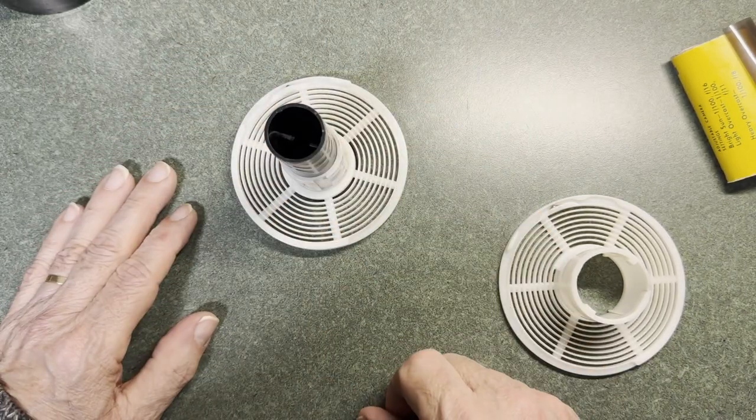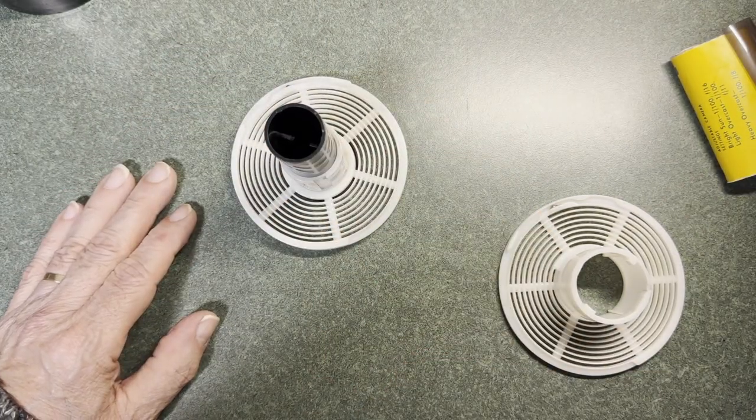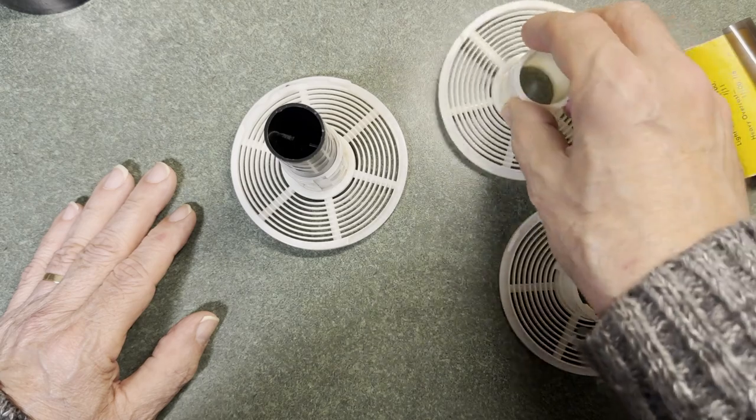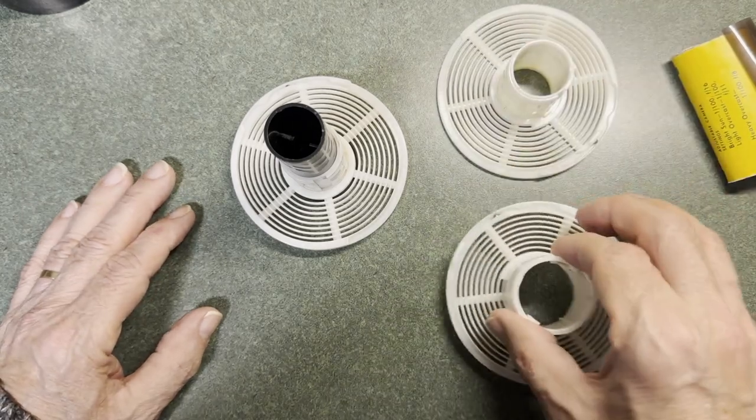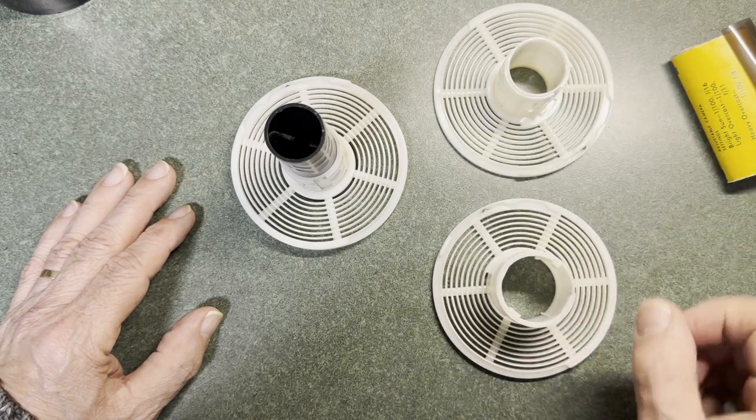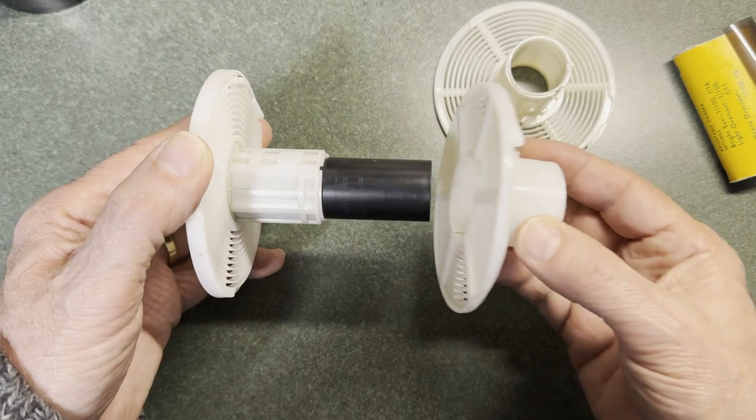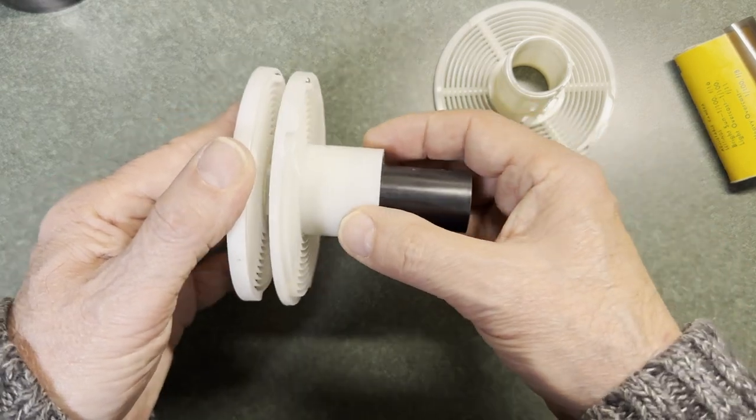Now we're going to take another skinny end from another spool. We're going to take the collar piece and slide it onto the spindle like this.